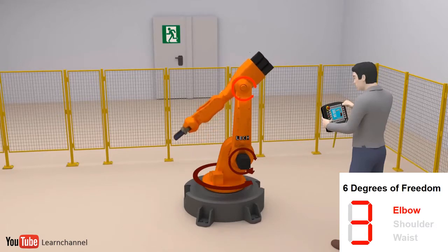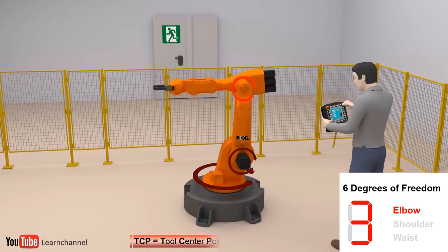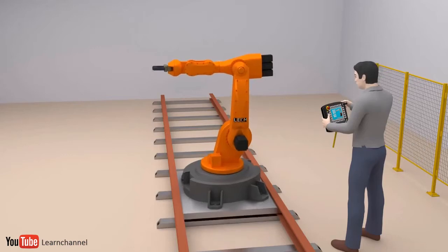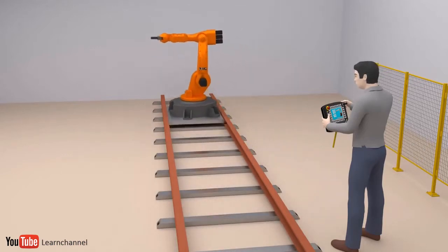With these three axes, you can position the TCP within the work envelope of the robot. If the robot slides along a track, it would have a further degree of freedom in form of linear movement.